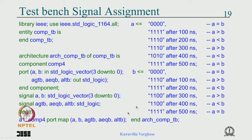One problem with this particular code is that if there are say 5 inputs (a, b, c, d, e) and something goes wrong at 300 nanoseconds, you have to go to different parts of the code - at 300ns for a, another place for b, another for c. It is a very cumbersome code because the stimulus is distributed all over the place. To verify what inputs you have supplied and what you want to modify is going to be quite tough.